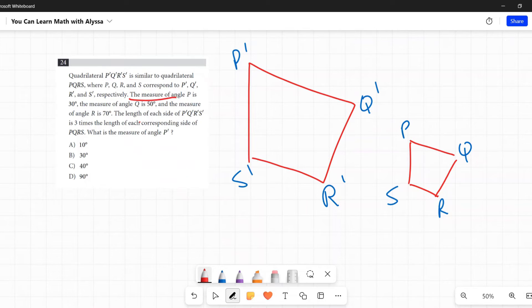Next sentence says the measure of angle P is 30 degrees. Okay, angle P here is 30 degrees, well the corresponding angle P prime is 30 degrees then. Corresponding angles are congruent.